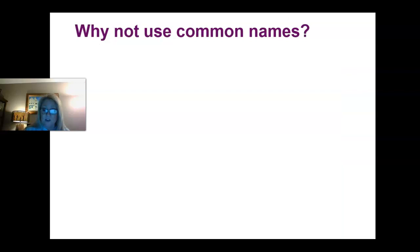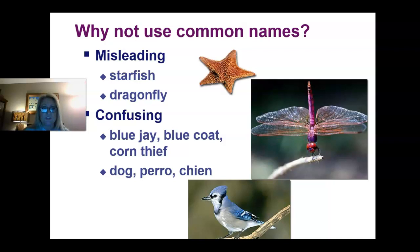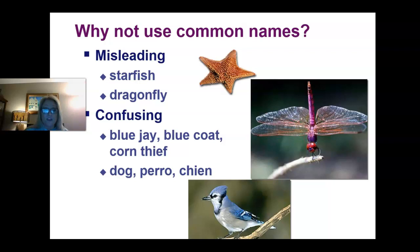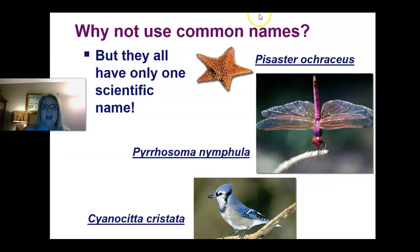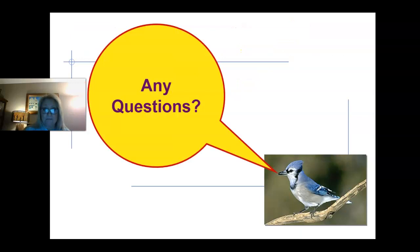So why don't we use common names? Obviously we have different languages. Also, if you use the name 'starfish,' that doesn't really tell you what it is because it's not a fish at all. Same as 'dragonfly' — it's obviously not a dragon, nor is it a fly. These are very misleading names. This bird is called a blue jay, a blue coat, and a corn thief. And in different languages, a dog is 'perro' in Spanish and 'chien' in French. So we need that scientific name. In all languages, it would be called by its Latin name — that's the common universal name.